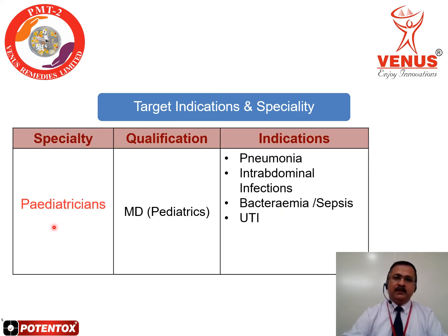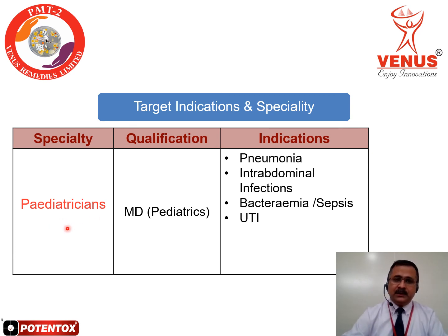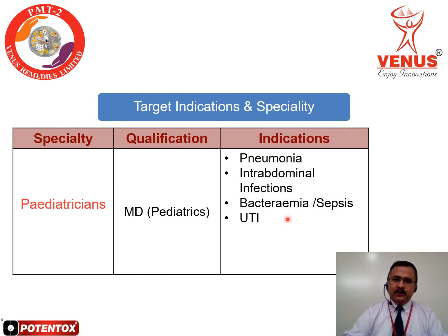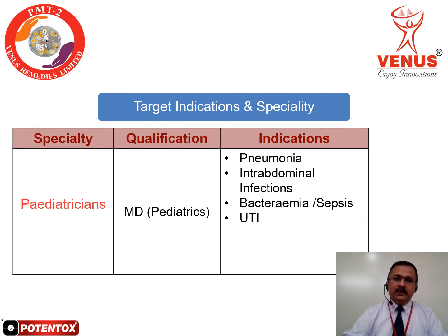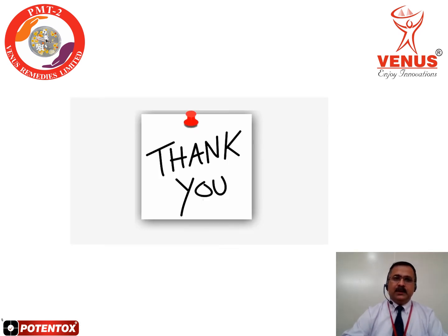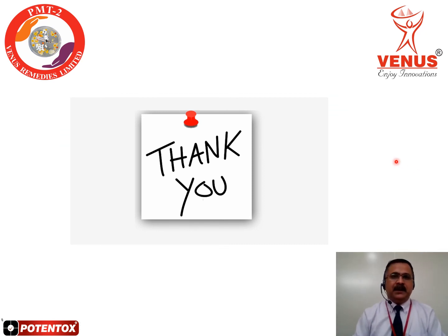The last specialty is pediatricians, for whom we have the 625 milligram pack of Potent Talks. The target indications for MD pediatrics include pneumonia, intra-abdominal infection, bacteremia, sepsis, and urinary tract infections (UTI). These are the main target indications for the pediatric category.